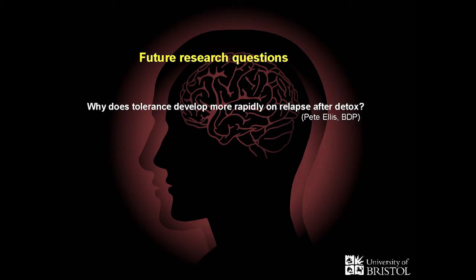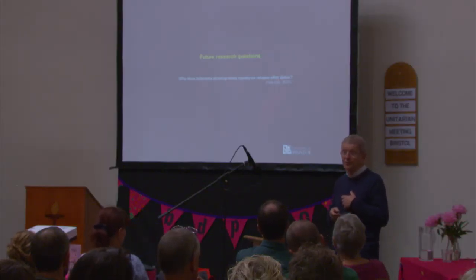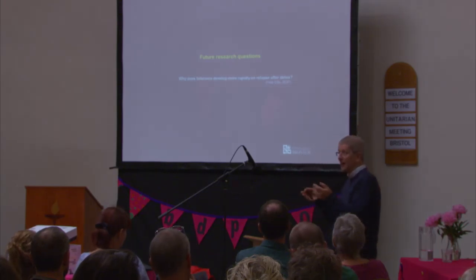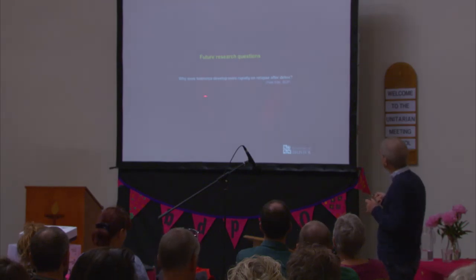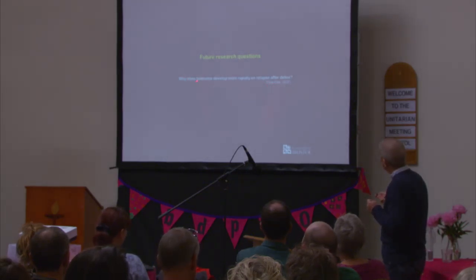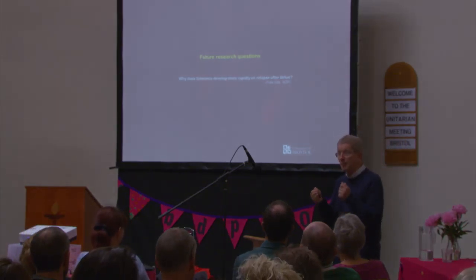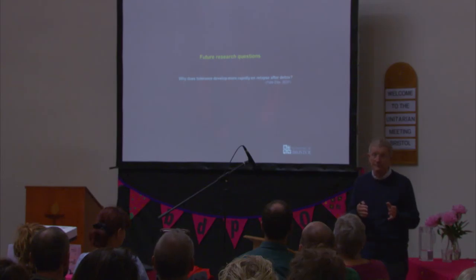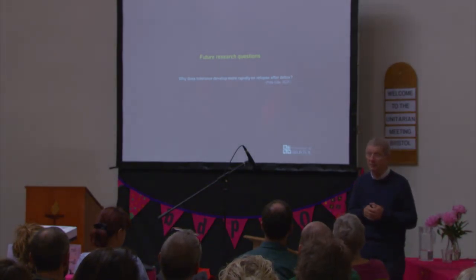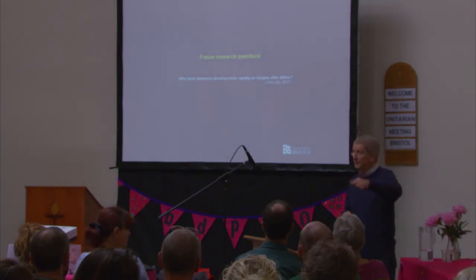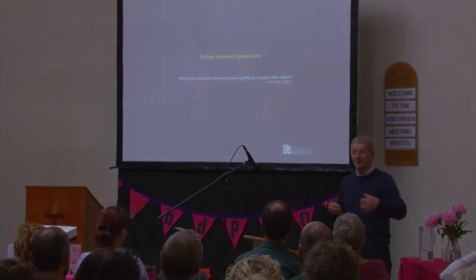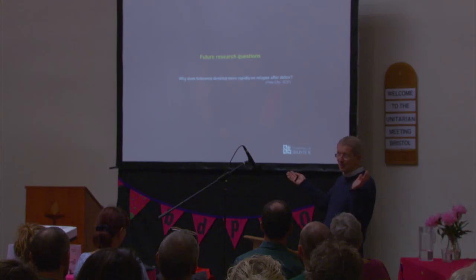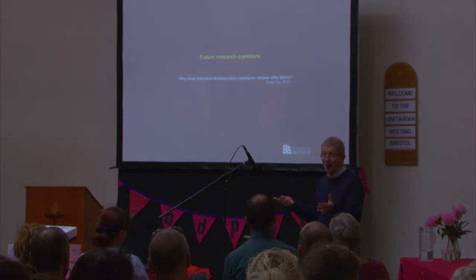On my first visit to BDP, Pete Ellis asked about gabapentin and pregabalin use, so we started an entire program on that entirely from his suggestion. On my second visit, Pete asked: why is it that when you've been tolerant to heroin, come off through detox, and then go back on to heroin, the tolerance develops much more rapidly? I stared at him and said I'd never heard that before. He just asked the room of clients — and of course, yes. I know hundreds of people that spend all their time researching this and none of us had known that before.